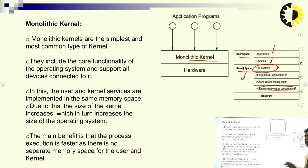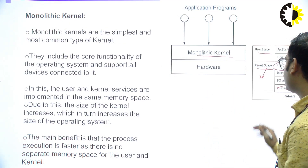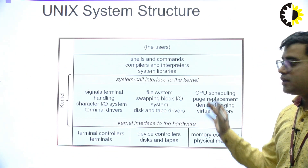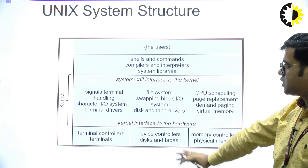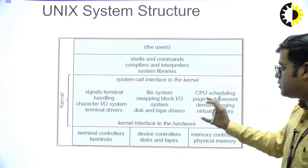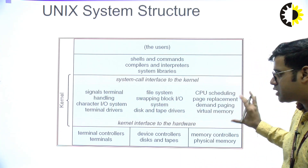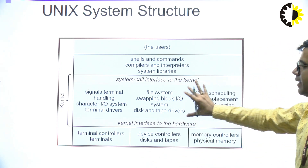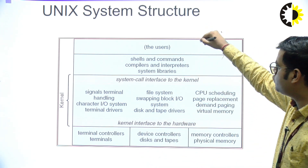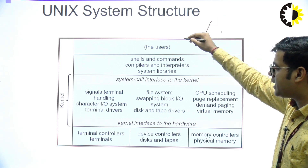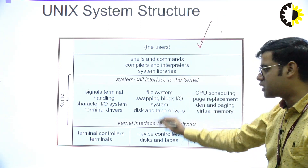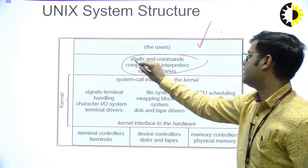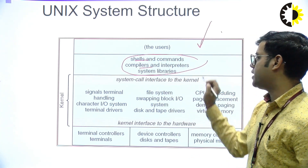In monolithic kernel, all functionality and all services regarding the hardware are kept in a single space called kernel space. This is the unique system structure of monolithic — a single address space where all functionality regarding the hardware resides. The user can interact with this kernel functionality through shells, commands, compiler, and interpreter system library.